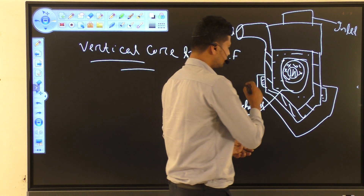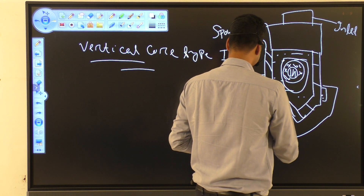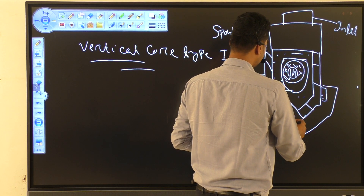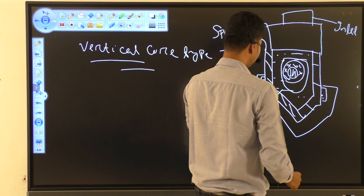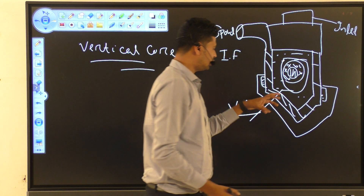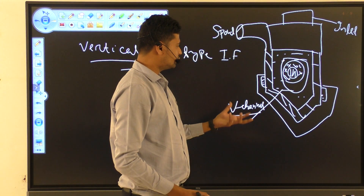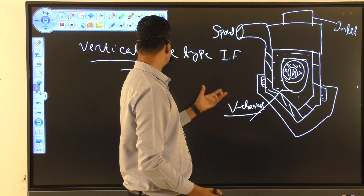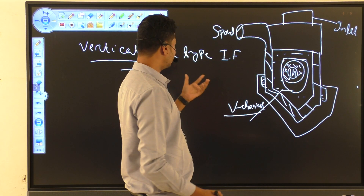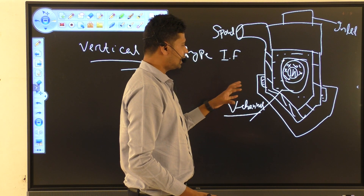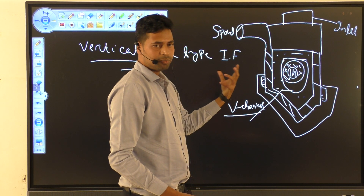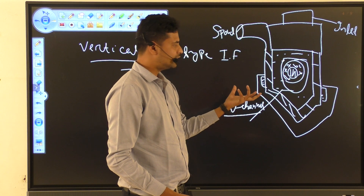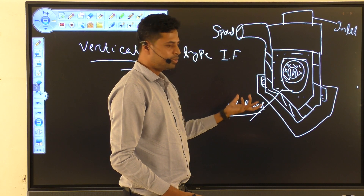The second benefit is that melting occurs by convection, making it very efficient. The vertical core type induction furnace is operated at regular frequencies and does not require low frequency operation.